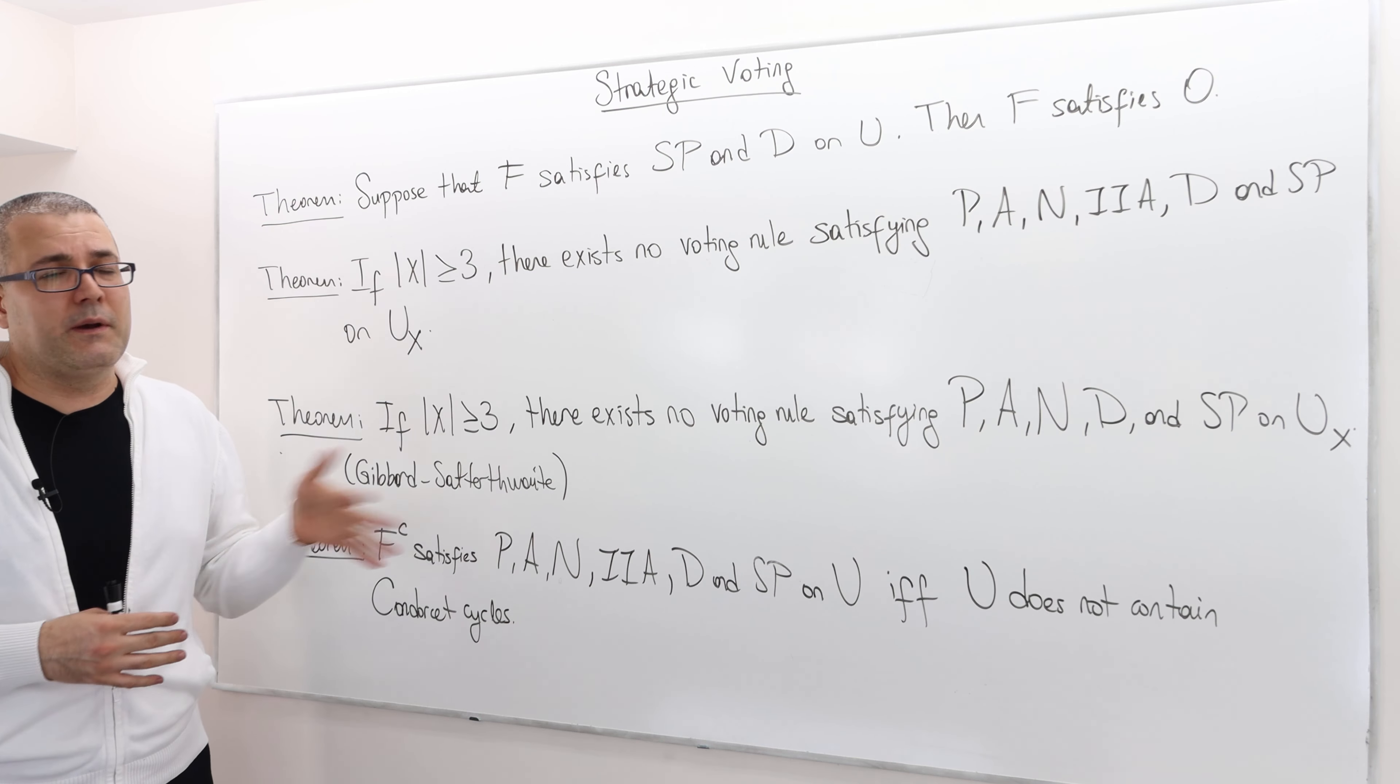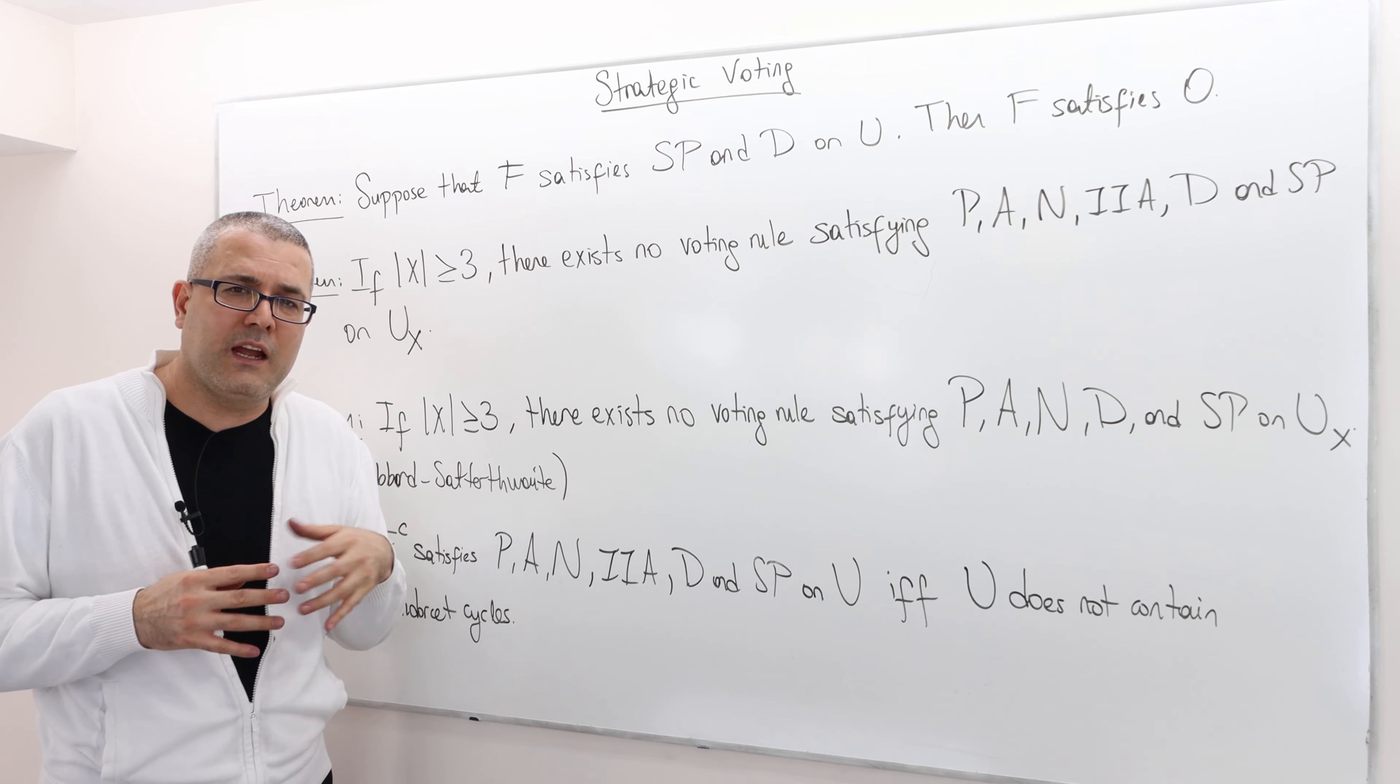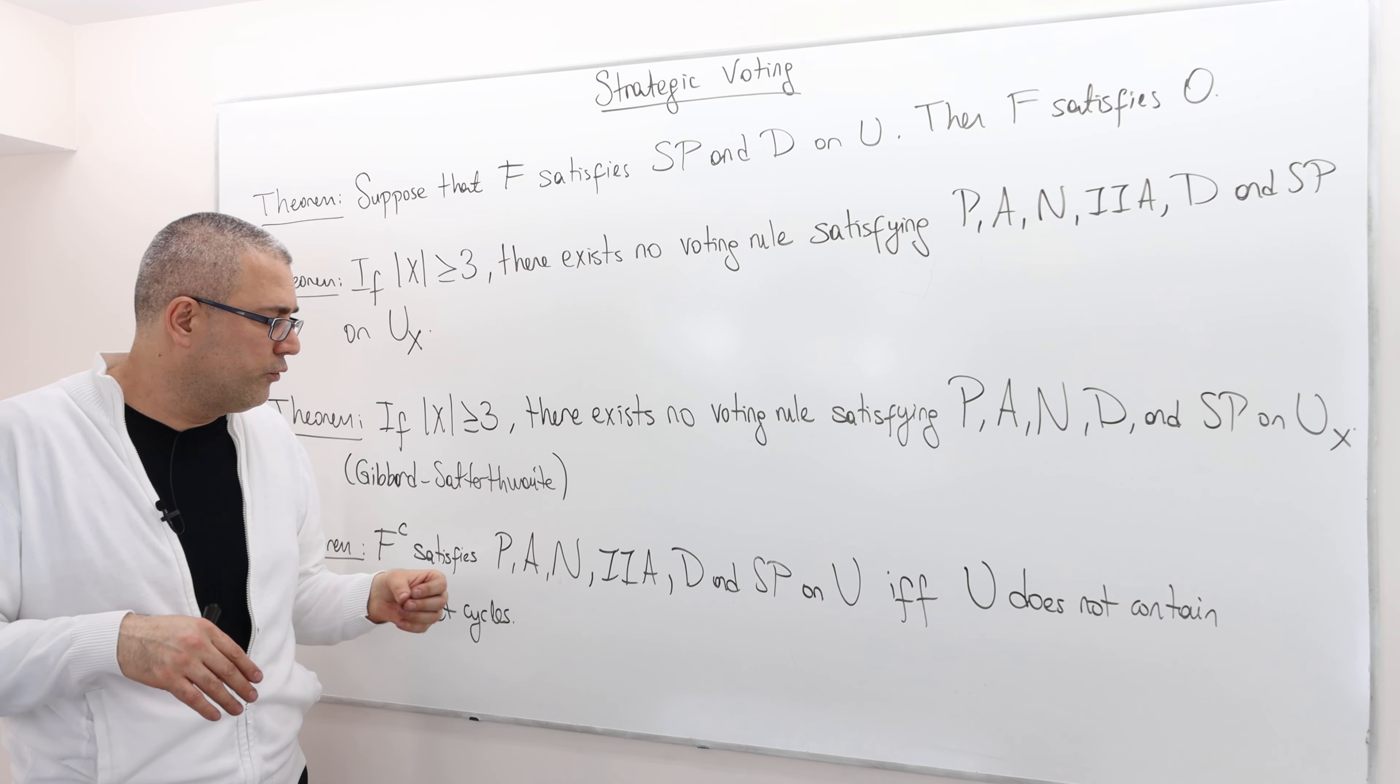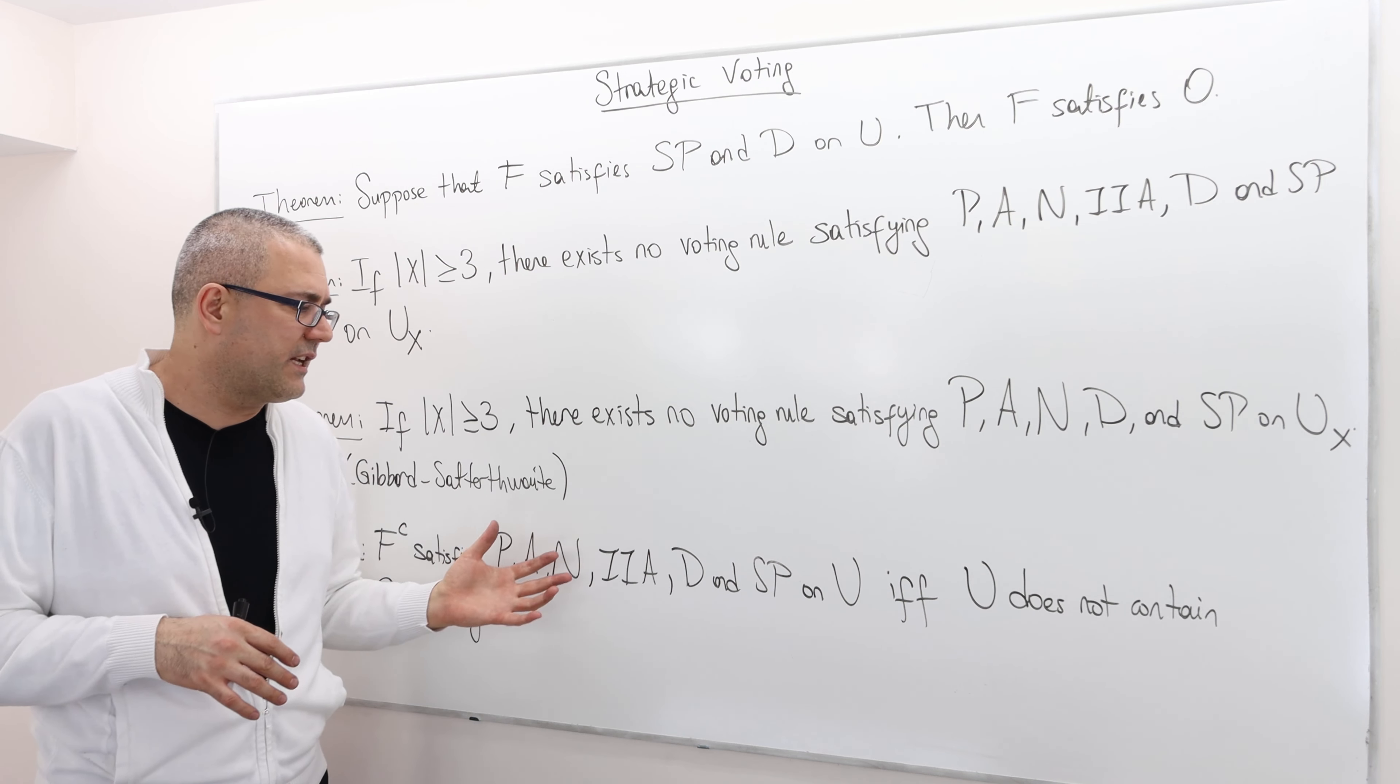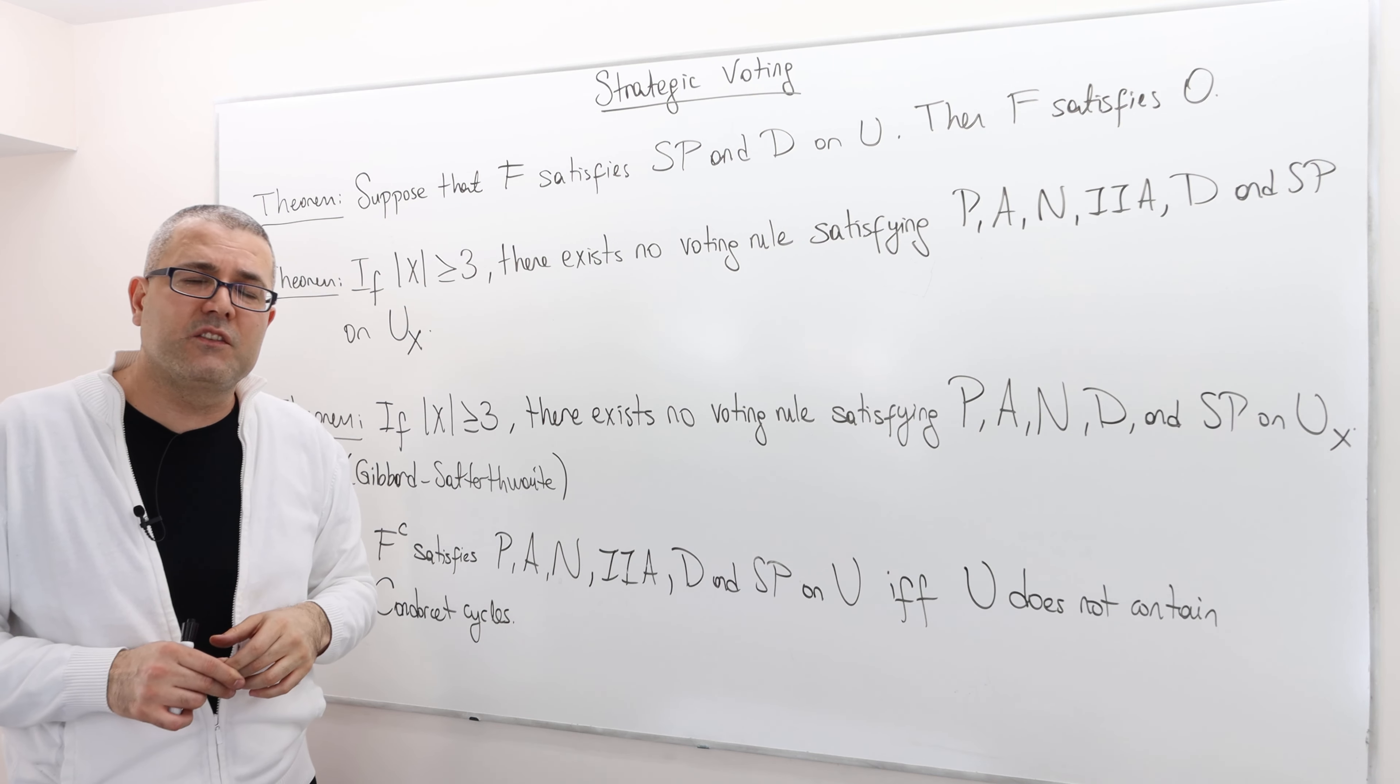And, you know, we can ask a bunch of other questions. Well, maybe IIA is too strong for the framework that you are analyzing and so you want to get rid of IIA. Well, then you may want to look at, I mean I'm sorry, you may be looking at voting rules which satisfy all those axioms except IIA on full domain of preferences. Do we have possibility result?